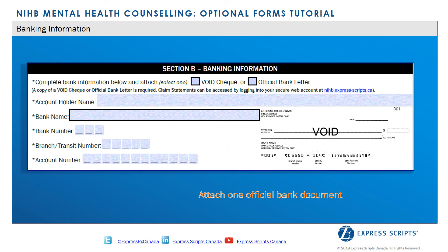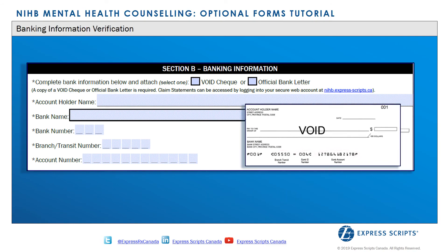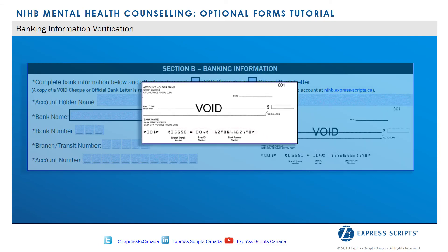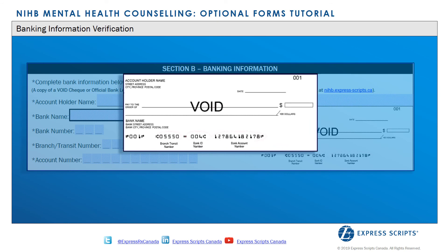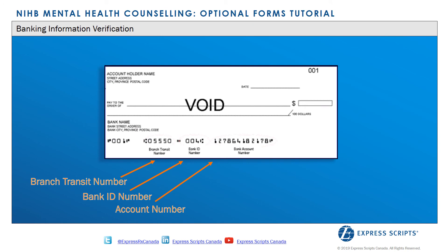Providers who wish to update their direct deposit information once enrolled can use this form for modification purposes. To avoid errors, please verify the correct number sequencing for the bank number, the branch transit number, and the account number by referring to your personal checks or contacting your bank, where they can provide the necessary information. For further clarification, please see the sample void check located in Section B.